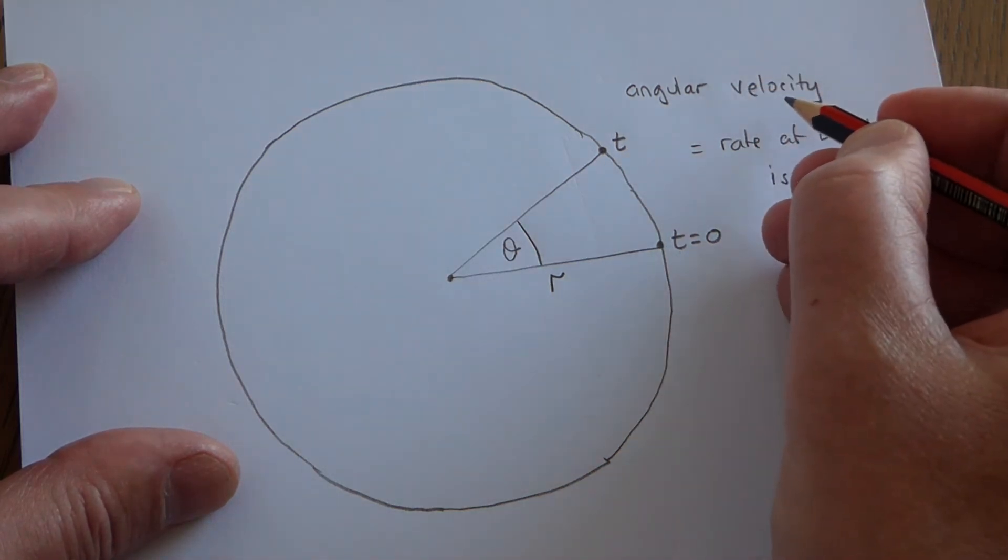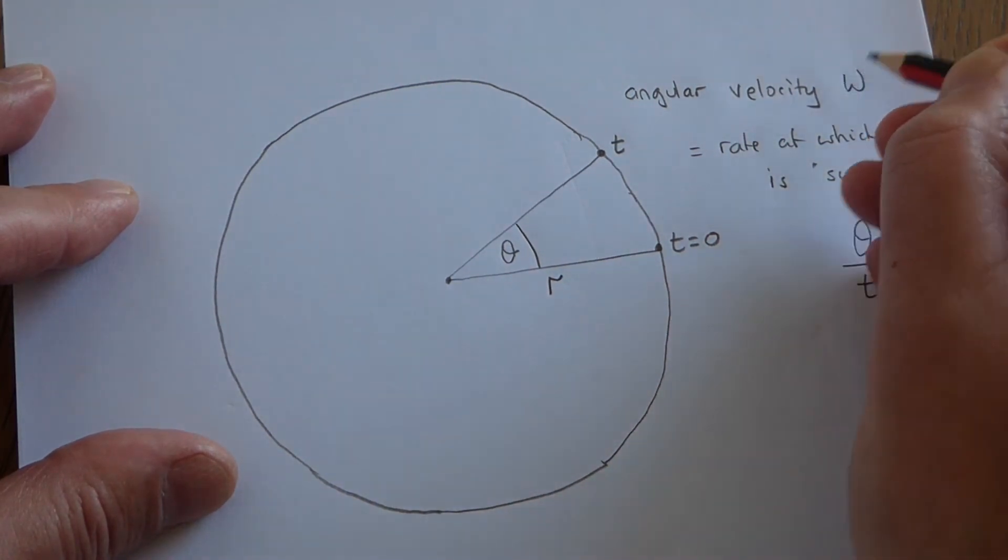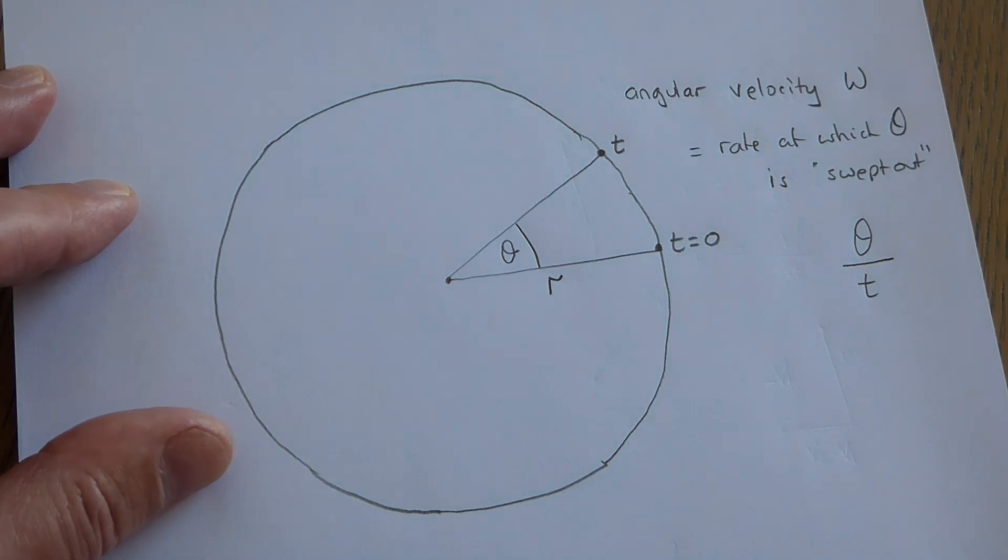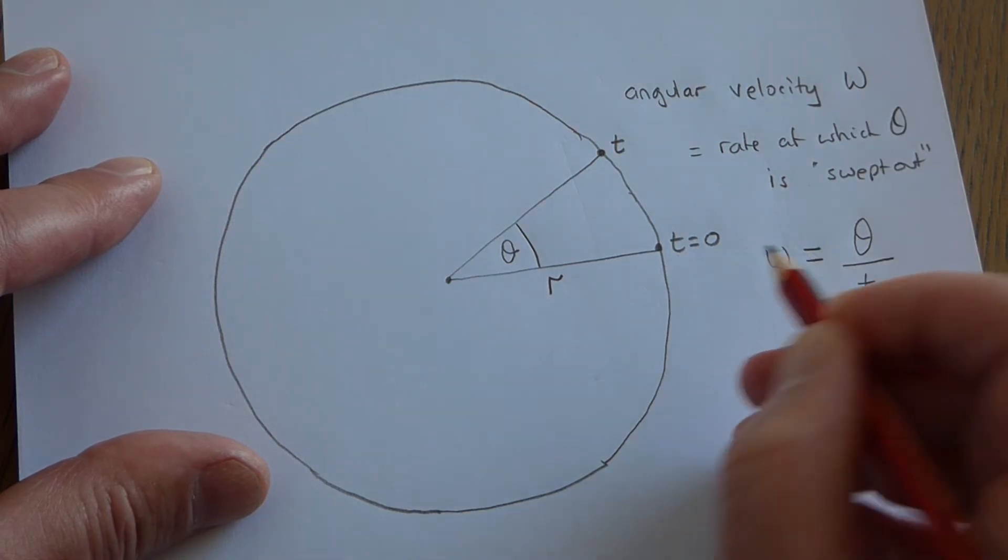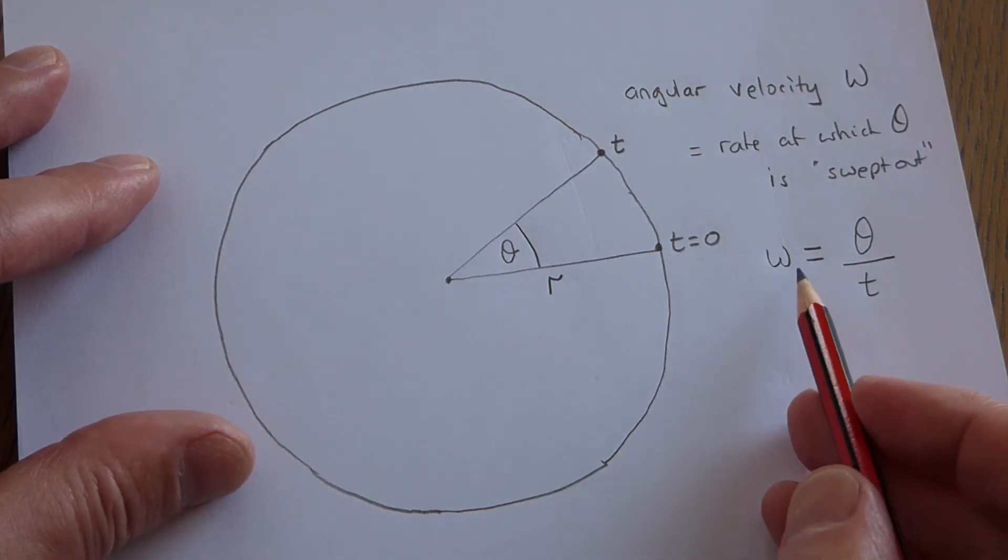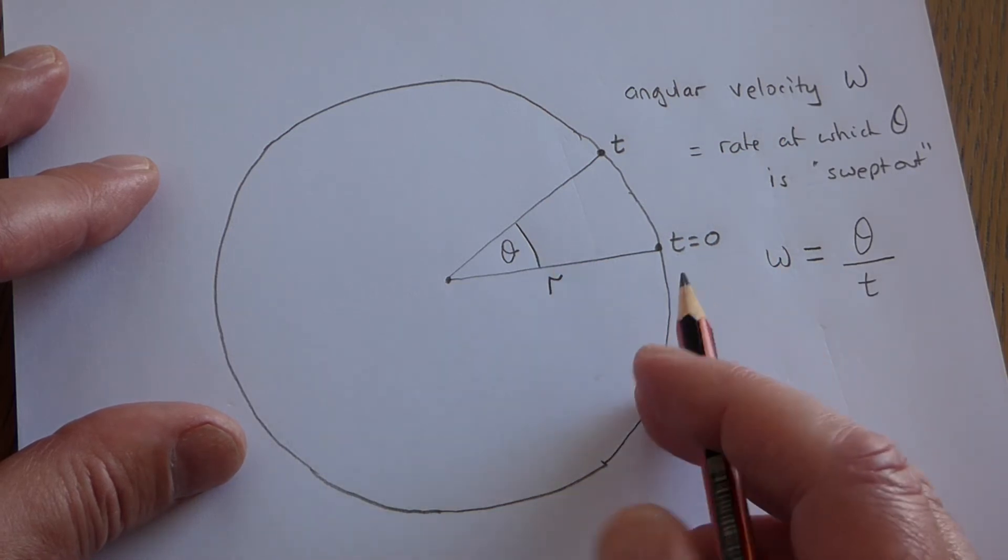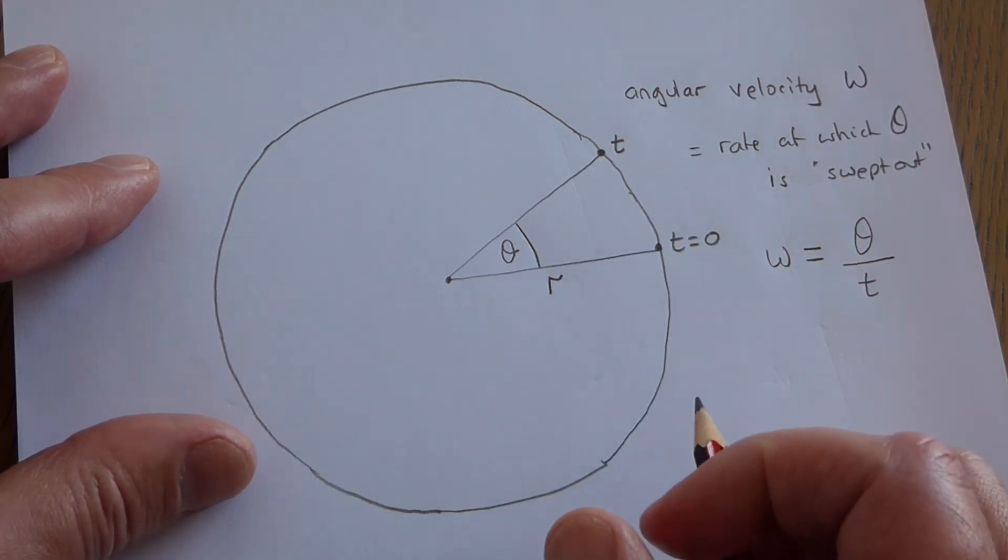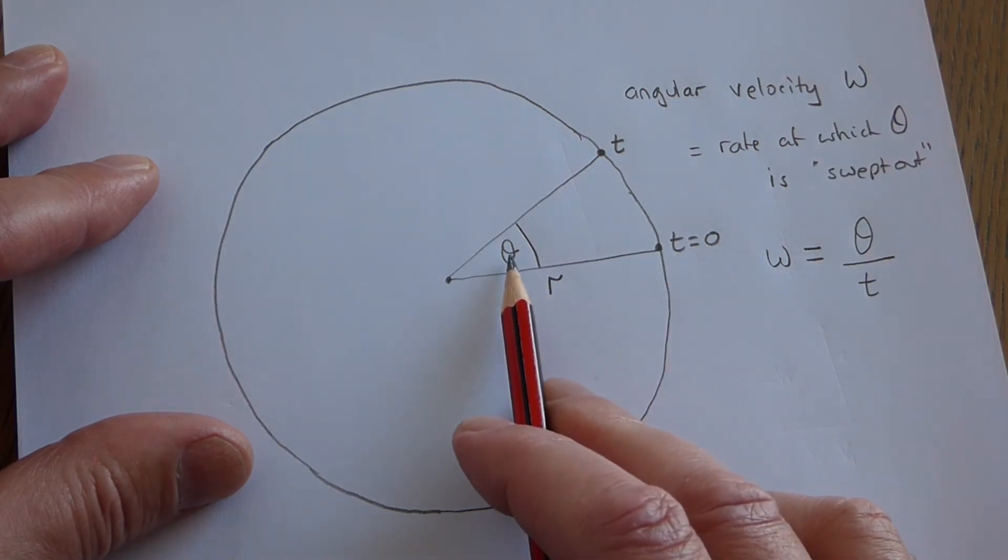Now the angular velocity is almost always given the symbol omega. Omega is the last letter of the Greek alphabet. So omega, the angular velocity, is theta divided by t. However, when we use the angular velocity, and it's the angle per unit time that's swept out, it is very inconvenient to use your angle in degrees.